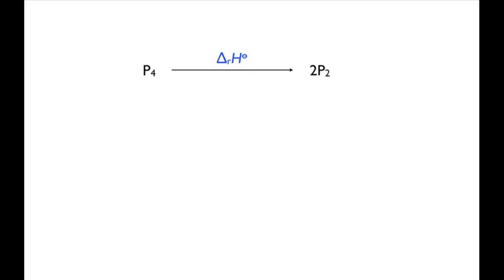Looking at the enthalpy cycle, you can break down the conversion of P4 to P2 into two steps. In the first of these, the six single bonds in P4 are broken to form four phosphorus atoms. In the second step, two triple bonds are formed to give rise to two P2 dimers.